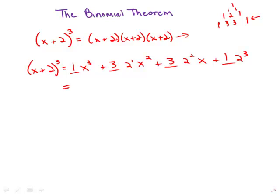The whole polynomial would be x cubed plus 3 times 2, which is 6x squared, plus 3 times 2 squared, which is 12x, plus 1 times 2 cubed, which is 8. That would be the cube of the polynomial, an enormous shortcut.